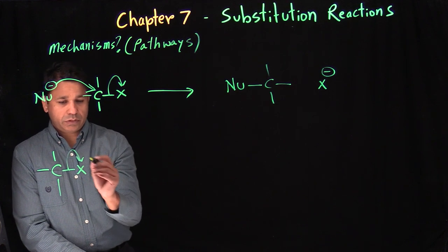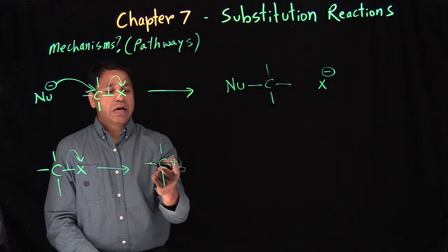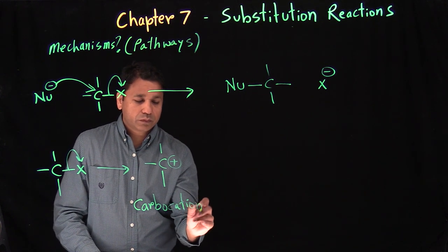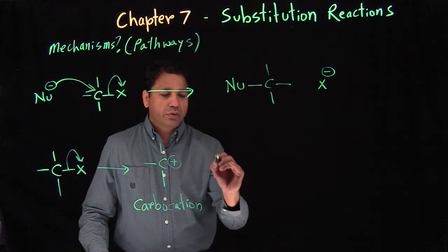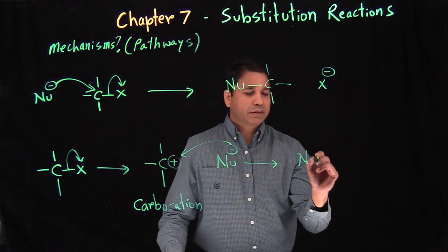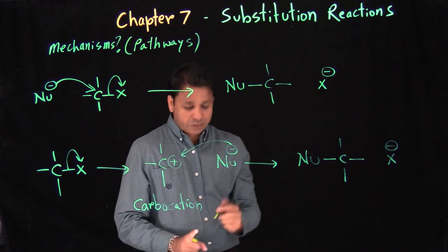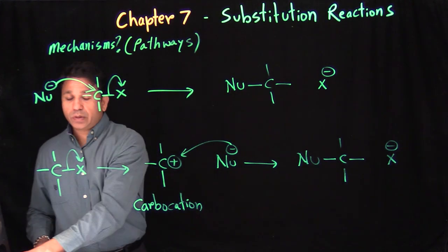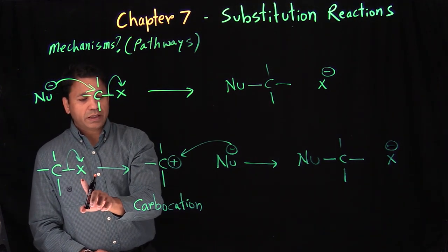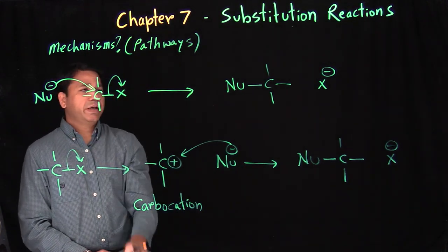In the second pathway, the leaving group leaves first, creating a carbocation — a carbon with a positive charge. Then in step two, the nucleophile comes in and forms the bond. The products are the same in both cases, but the course of the reaction differs: either nucleophile attacks and leaving group leaves simultaneously, or leaving group leaves first to form a carbocation and then the nucleophile attacks.